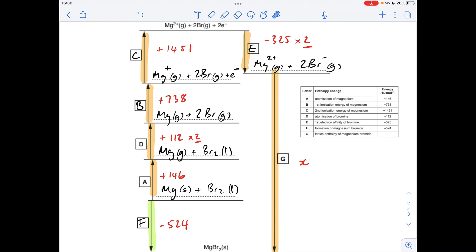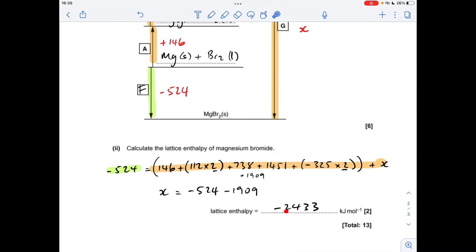So all we need to do is put the numbers in and solve for x. And the lattice enthalpy comes out at minus 2433 kilojoules per mole.